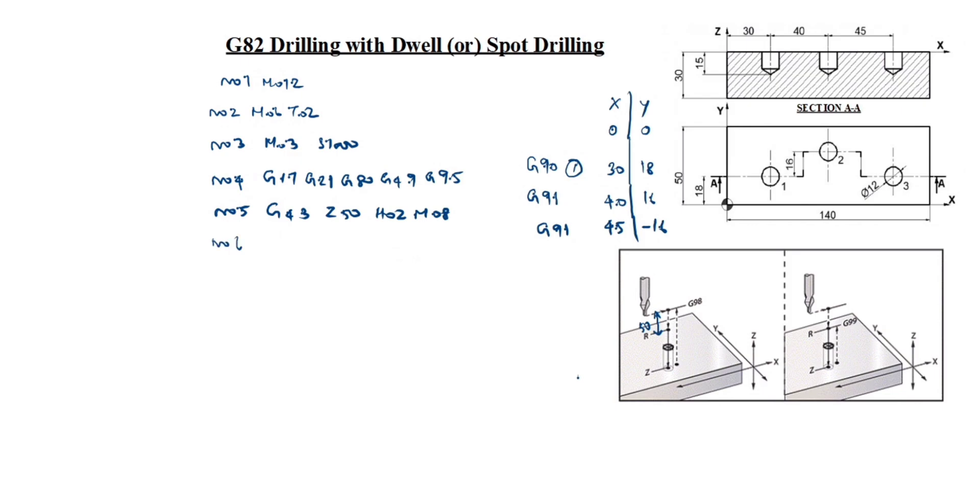Next, N06 G90 G54 G00 X0 Y0. You see here, the first X and Y value is G90 code, this is absolute command. G54 is work coordinate system. G00 is rapid mode. X0 Y0, the starting point is X0 Y0.